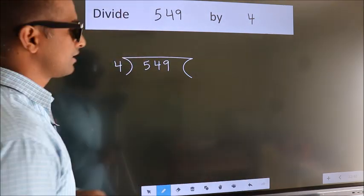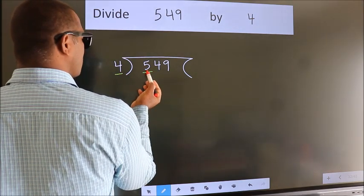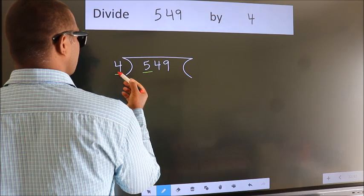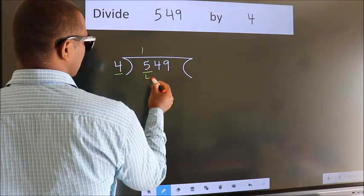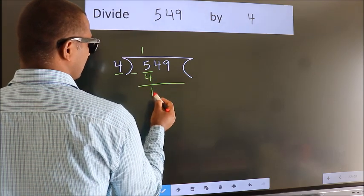Next. Here we have 5, here 4. A number close to 5 in 4 table is 4 once 4. Now we should subtract. We get 1.